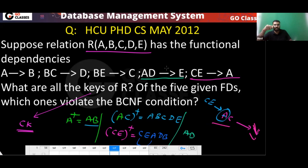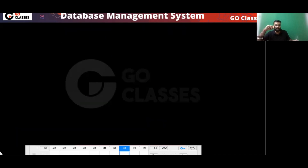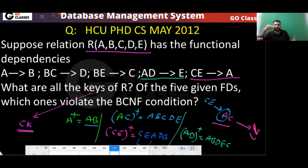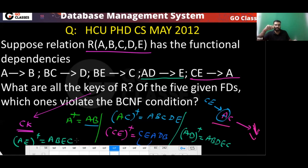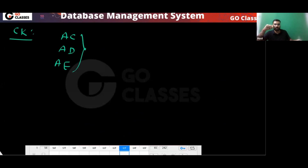Now check AD-plus: AD can determine E, A can determine B, and B can determine C. So AD-plus gives everything — AD is also a candidate key. The candidate keys found so far are AC and AD. AB is not a candidate key.